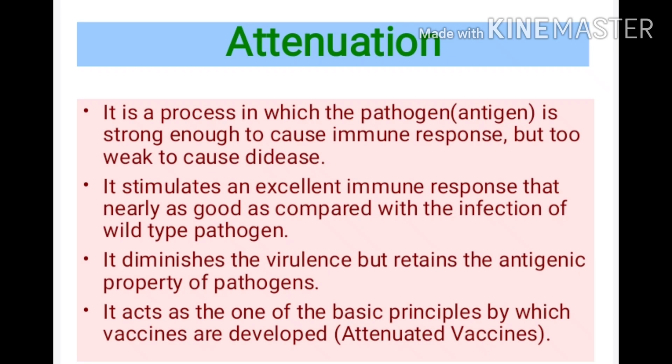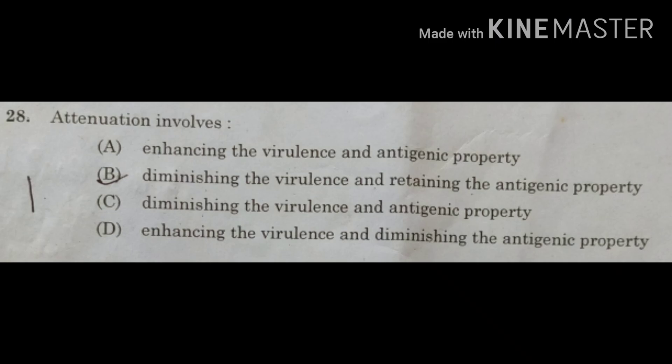This attenuation process acts as one of the basic principles by which vaccines are developed — such vaccines are called attenuated vaccines. The father of vaccination is considered Edward Jenner, but the basic principle of vaccination was first developed by Louis Pasteur. The correct answer for this question is option B: diminishing the virulence and retaining the antigenic property.